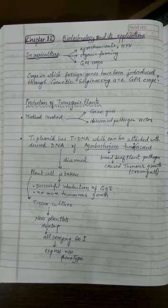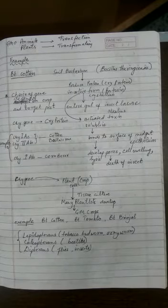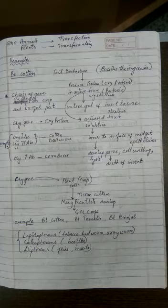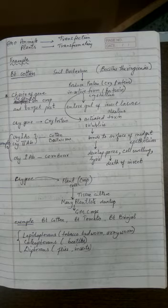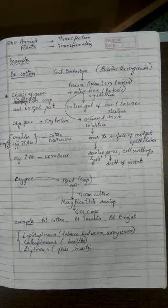The best example of this is BT cotton. BT stands for Bacillus thuringiensis, a soil bacterium that produces a cry protein. In its inactive form it is called a protoxin — a crystalline form that causes no harm. However, once it enters the intestine of an insect or insect larvae, it becomes solubilized in the alkaline gut medium and is activated into a toxin. It then binds to the surface of the midgut epithelium, causing pores to develop, followed by cell swelling, cell lysis, and finally the death of the insect or larvae.